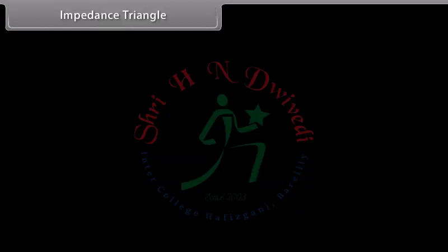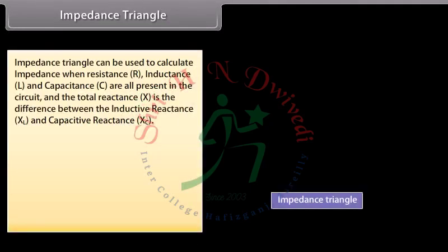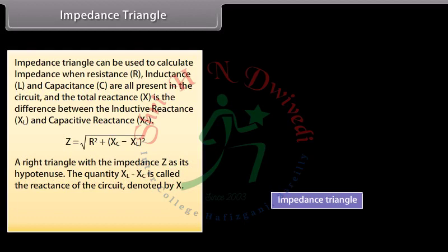Impedance triangle: the impedance triangle can be used to calculate impedance when resistance, inductance, and capacitance are all present in the circuit. The total reactance is the difference between inductive reactance and capacitive reactance. Z = √(R² + (XC − XL)²). A right triangle has impedance Z as its hypotenuse. The quantity XL − XC is called the reactance X of the circuit. Tan φ = (XC − XL) / R.